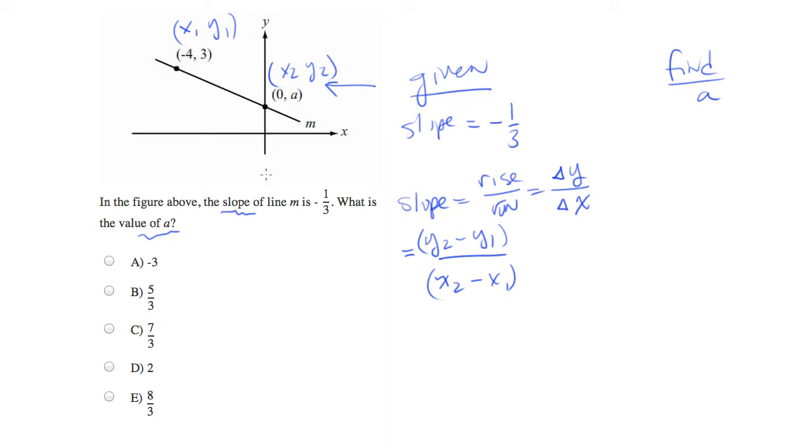Now, at this point, what we need to simply do is plug in. So I'm going to take the values that we read off our chart, and I'm going to plug them into this equation for slope. By the way, the slope should be equal to negative one-third, as was given.